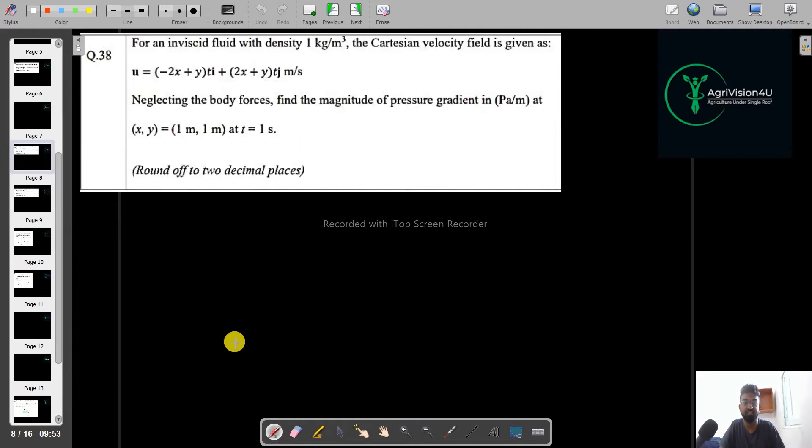For an inviscid fluid with density 1 kg per meter cube, the Cartesian velocity field is given as u equals minus 2x plus y t, v equals 2x plus y into t. Neglecting the body forces, find the magnitude of the pressure gradient. So whenever they say pressure gradient, you must use our Navier-Stokes equation.